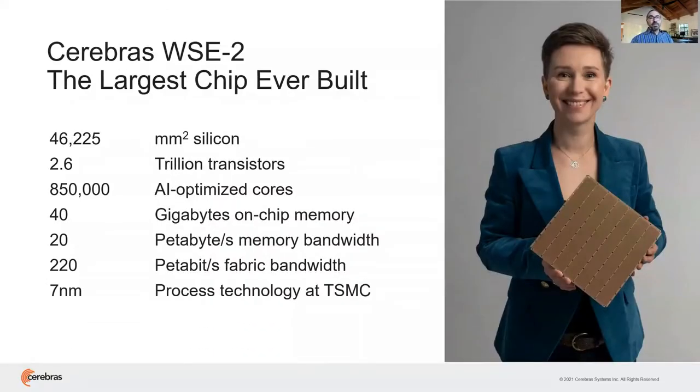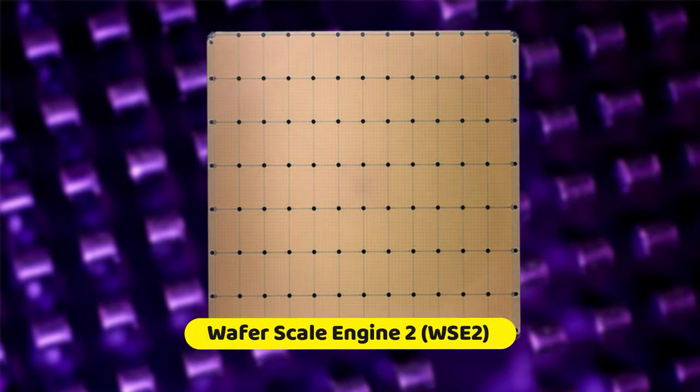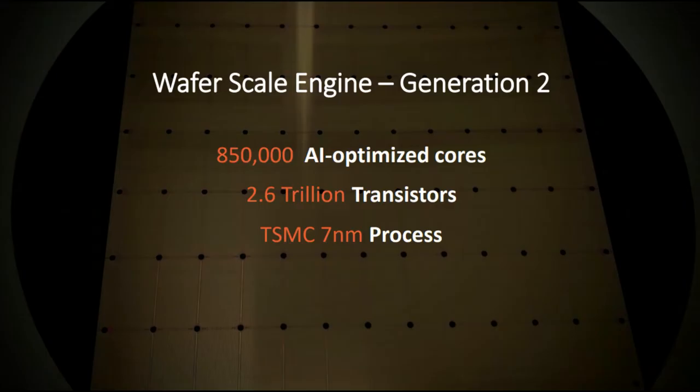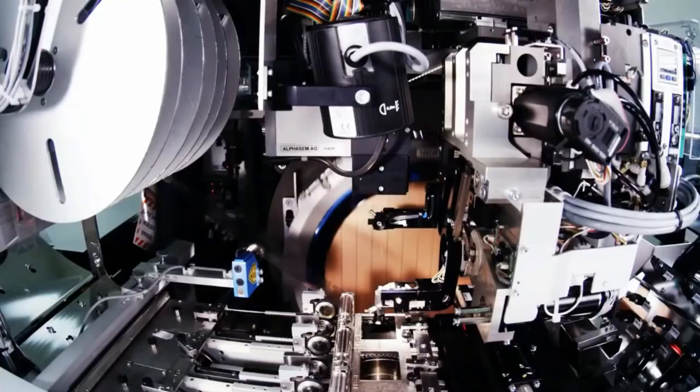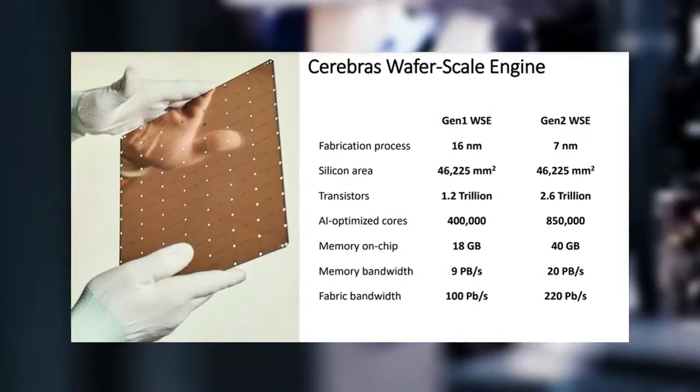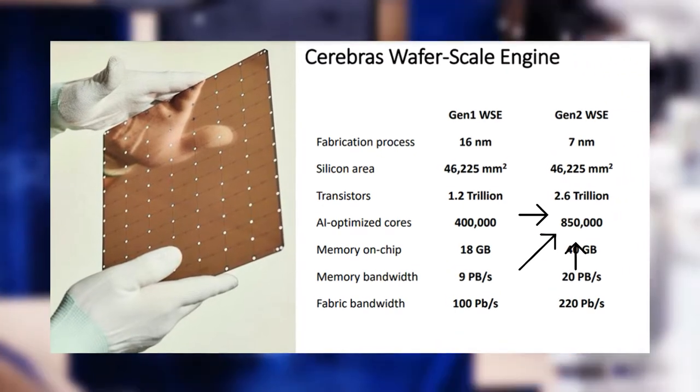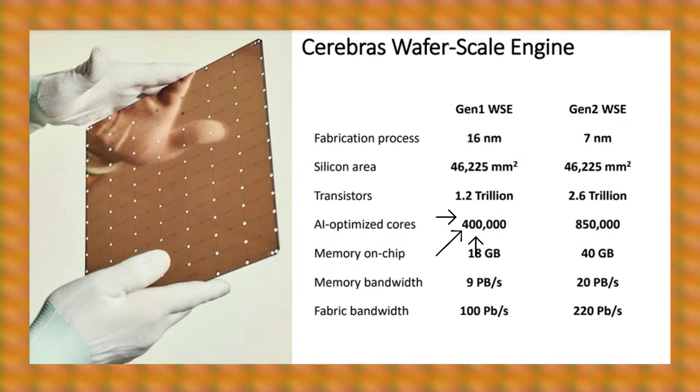Last year, in April 2021, Cerebrus launched their second generation chip, Wafer Scale Engine 2, or WSE2, which contains 2.6 trillion transistors, using an AI system that is a million times more powerful than any other computer system before it. This model has 850,000 cores, while the first generation model consisted of less than half of that.